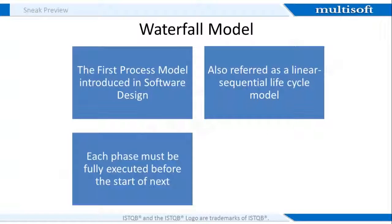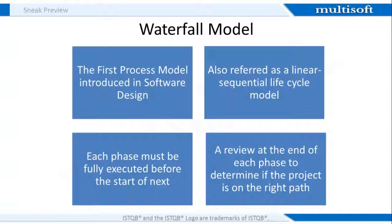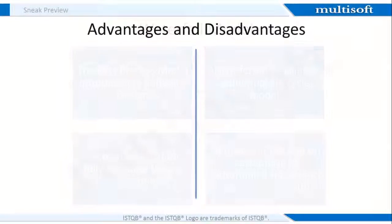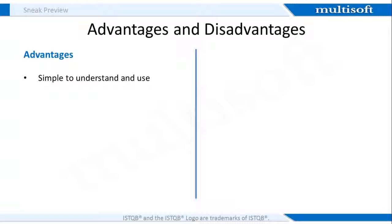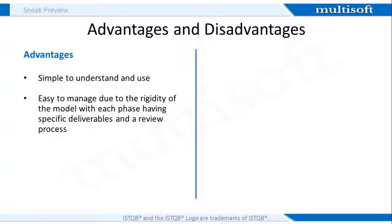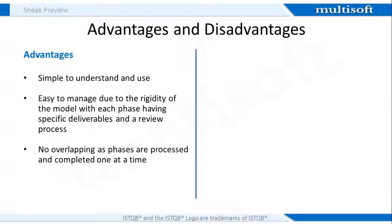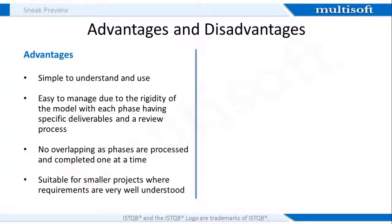In a waterfall model, each phase must be fully completed before the next can begin. Also, this type of model is basically used for small projects with no uncertain requirements. At the end of each phase, a review takes place to determine whether all the required activities related to a phase lie on the right path, and a decision is taken on its further continuity or rejection. One of the advantages of the waterfall model is that it is simple and easy to understand, and easy to manage due to its rigidity, with each phase having specific deliverables and a review process. Phases are processed and completed one at a time with no overlapping, and it works well for smaller projects with a duration of 3–4 months where requirements are very well understood.